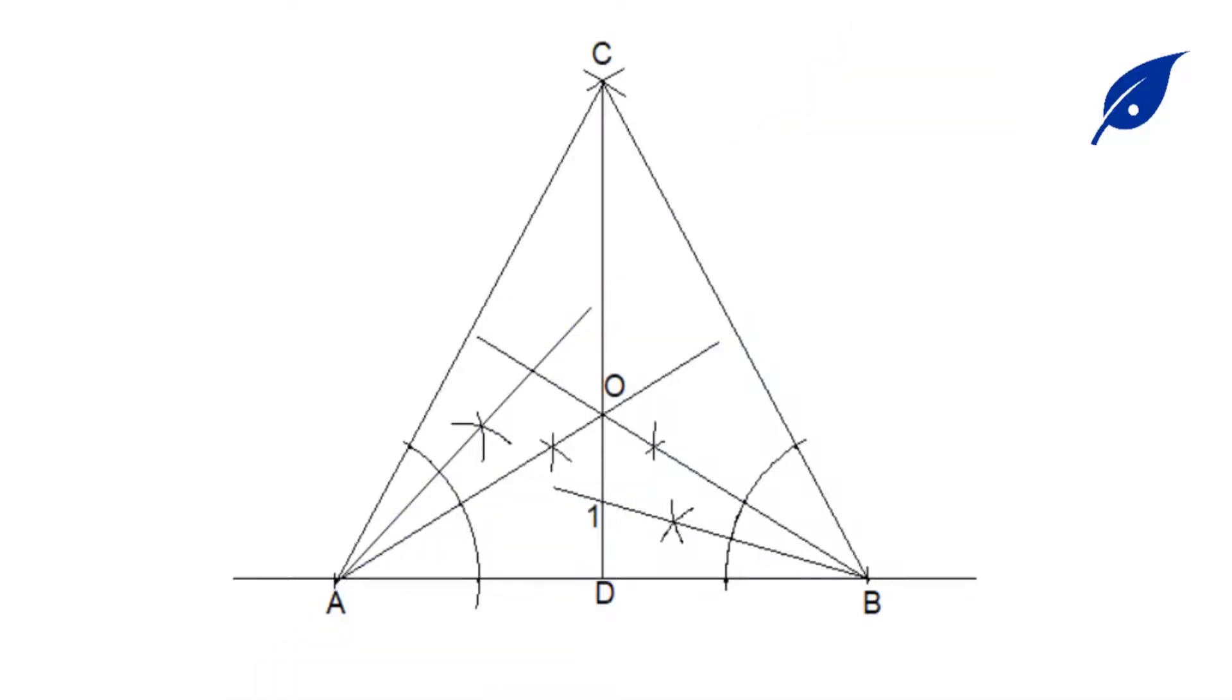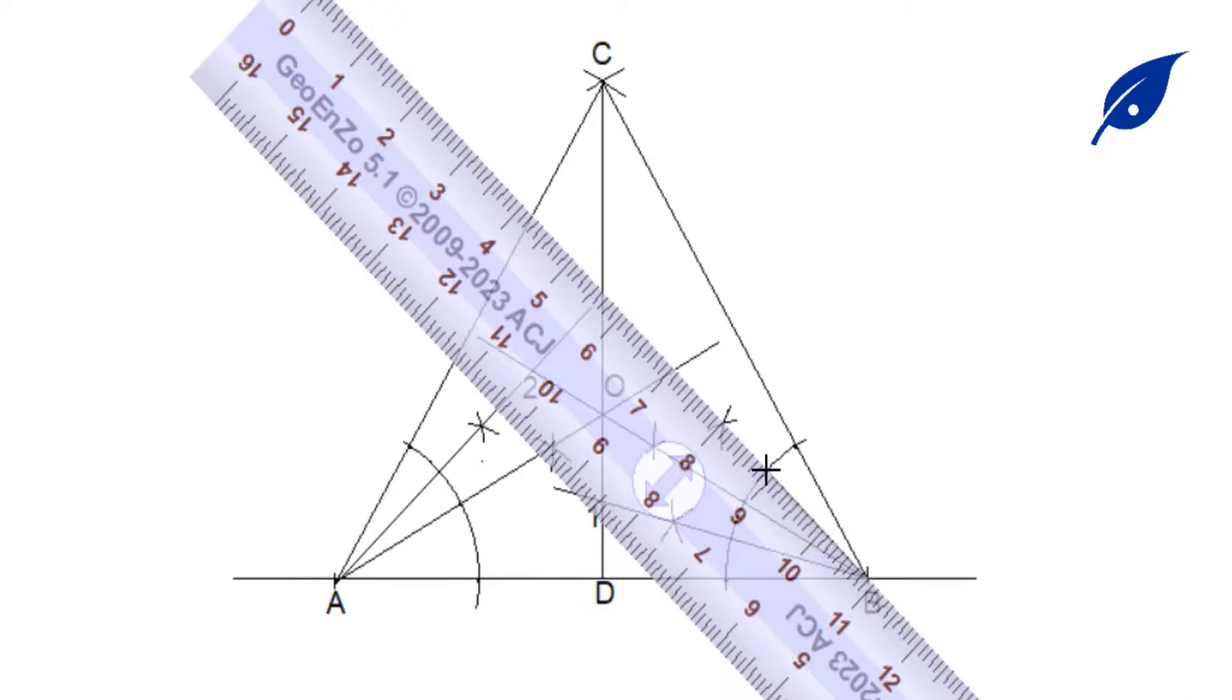Then also bisect the angle CAO to get the second point. Where it meets the line coming from B, we'll call it center 2.